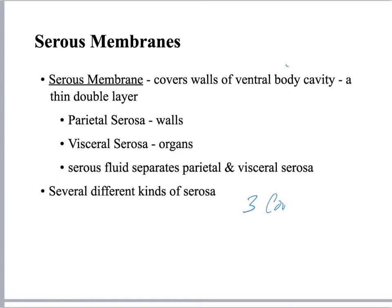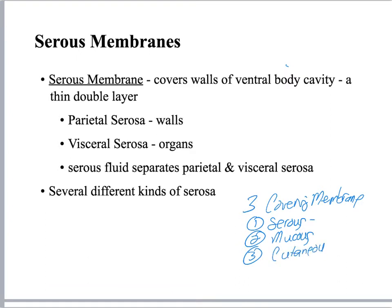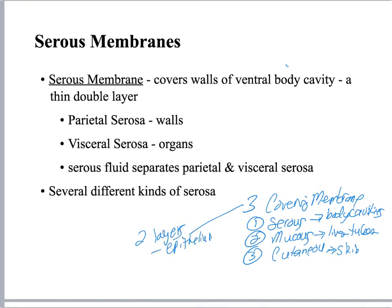Also from AMP1: three covering membranes — serous, mucous, and cutaneous. The serous membrane is in the ventral body cavity. Mucous membranes line tubes. Cutaneous is skin. These membranes always have two layers: epithelium and connective tissue proper, making them a simple organ. Sometimes there is a third layer of smooth muscle. Review that histology and those structures.